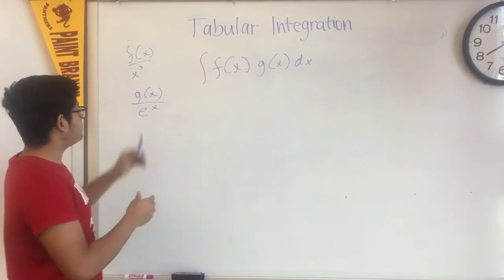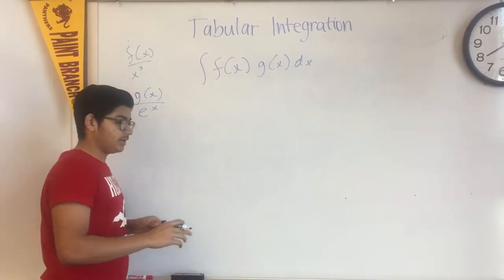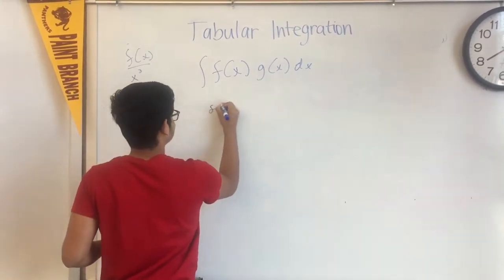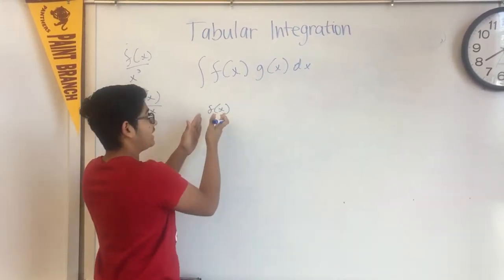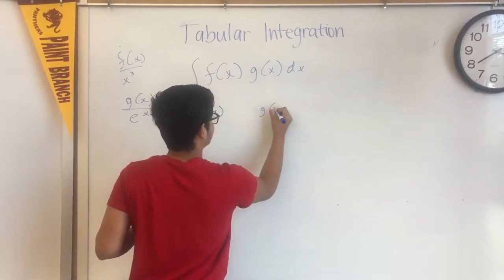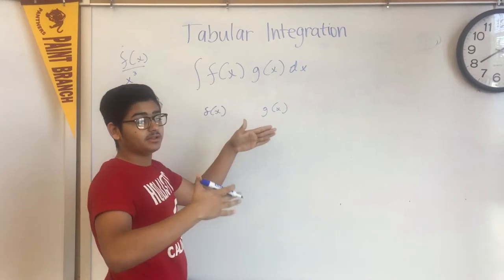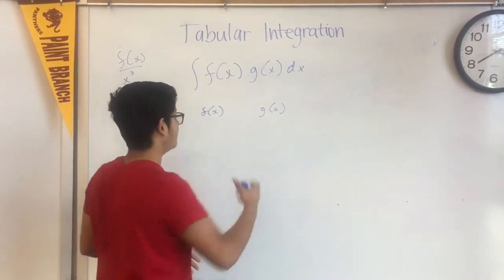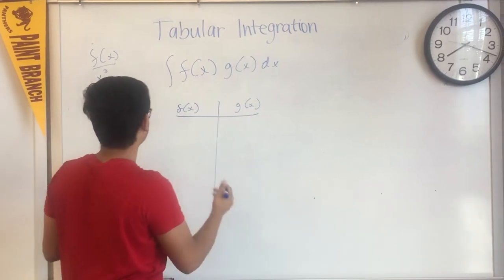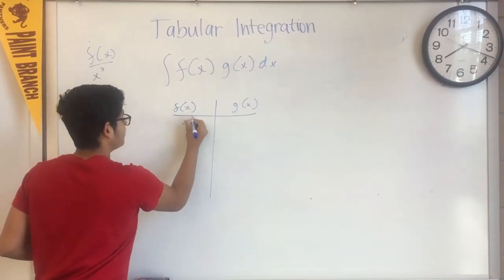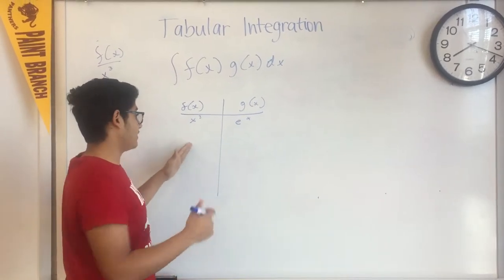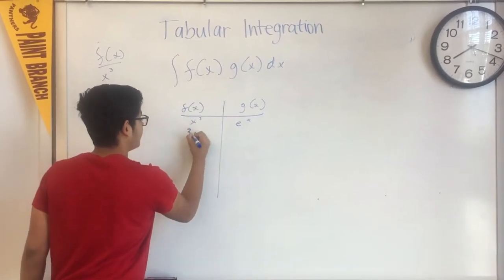Once we have this set up, we can set up a quick t-table. We can have f of x, which we're going to be taking the derivative of, and g of x, which we are going to be continuously integrating. First we're going to have x cubed and e to the x. Then we're going to take the derivative of f of x — that's going to be 3x squared.